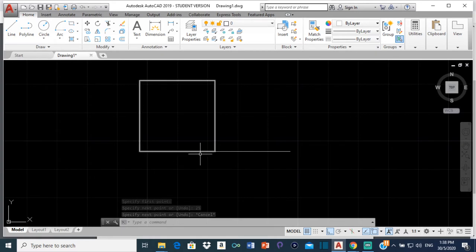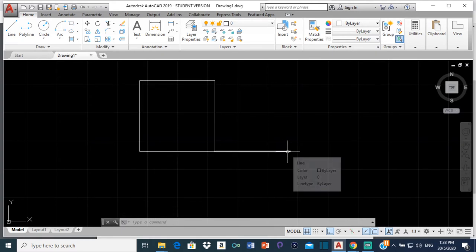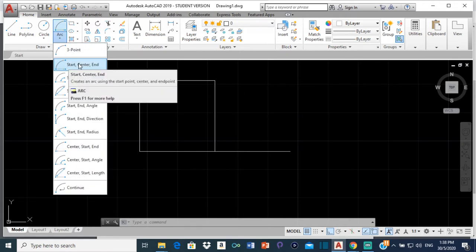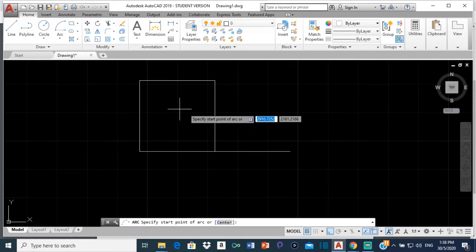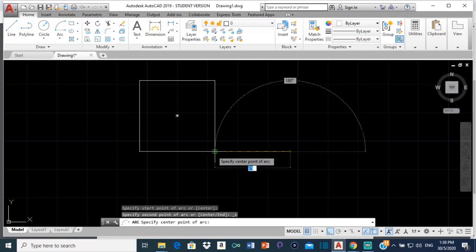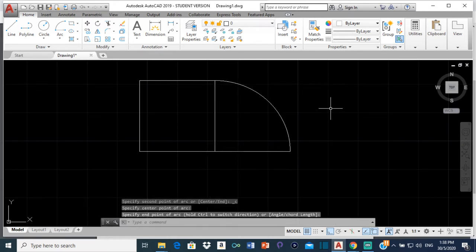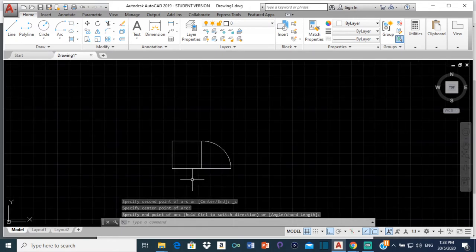So from here to this point here, the total distance would be 50. So now we are going to select arc and we are going to select start, center, end here. So we click where we want to start. We want to start at this point. This would be the center here and we want to end right there. So that's our arc. So that's our first point done.